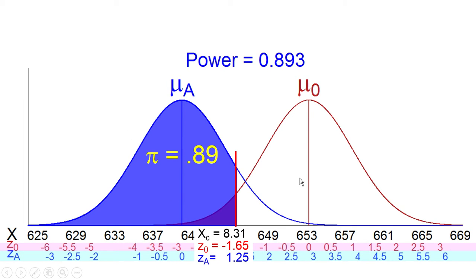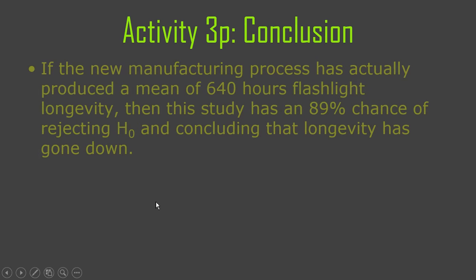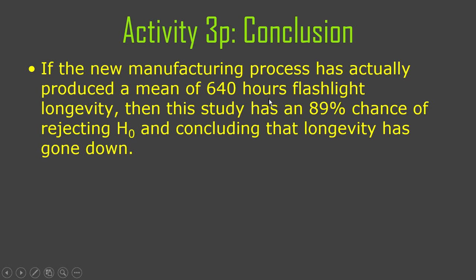For z equals 1.25 the area is 0.89 — that's our power. My R script confirmed 0.893. So the power is 0.89, which is pretty good. If the new manufacturing process has actually produced a mean of 640 hours of flashlight longevity, then this study has an 89% chance of rejecting the null and concluding that longevity has gone down. The interpretation of power is always a conditional probability — conditioned on the alternative hypothesis being true at a specific value.